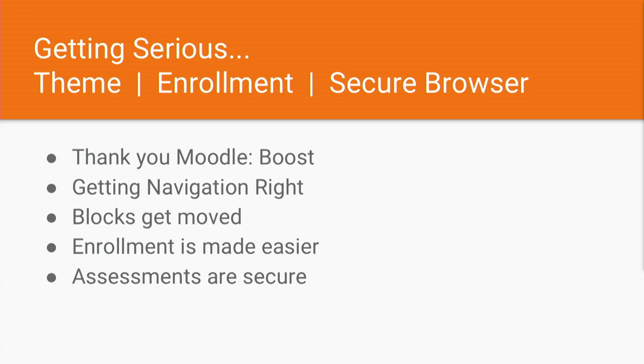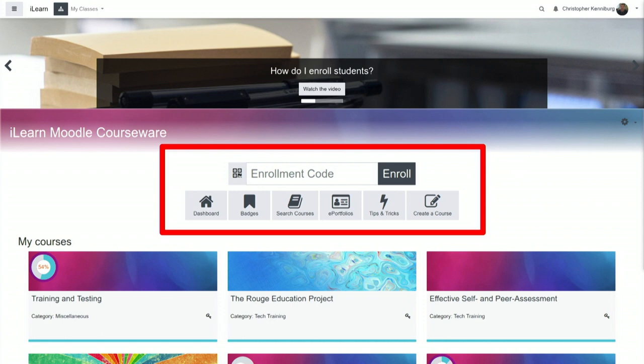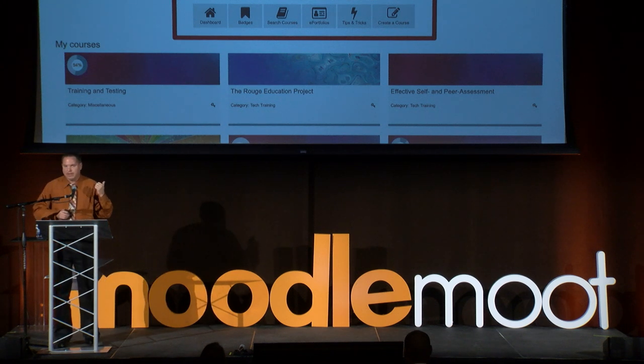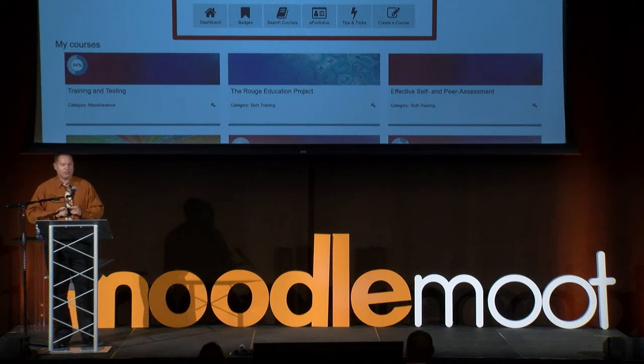We focused on three things: the theme, an enrollment plugin, and a secure Chromebook app that helps teachers giving a test know that kids aren't cheating. With the Boost theme, holding true to our core idea — when they come to our home page we want them to log in and get into the course. All of our themes have icon navigation as a calling card, directing students to certain places. We also added an enrollment code, a new plugin developed to mimic Google Classroom's enrollment approach.